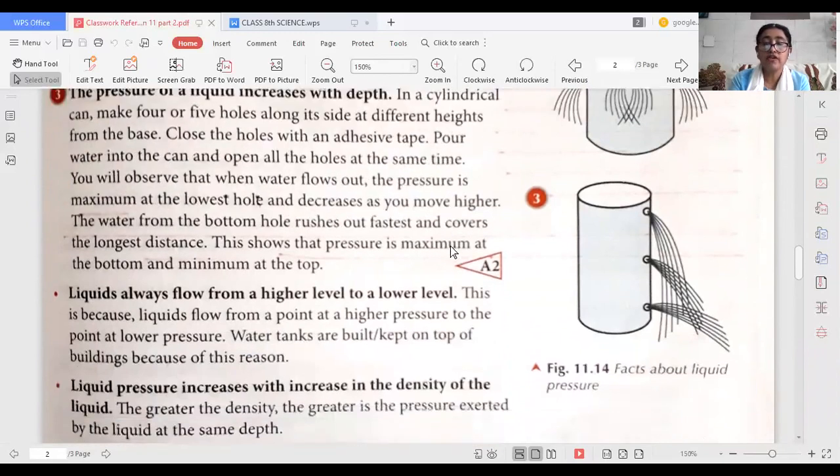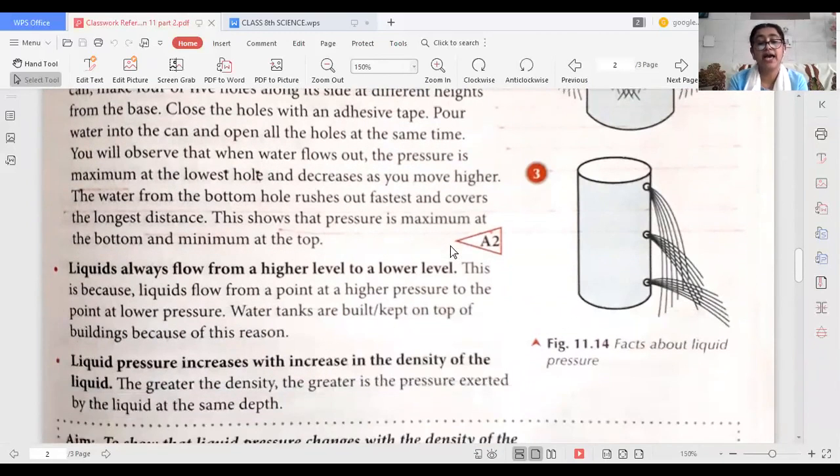Now liquid always flows from higher level to lower level. This is because liquid flows from a point at a higher pressure to the point at lower pressure. I'm repeating: liquid flows from a point at higher pressure to a point of lower pressure.